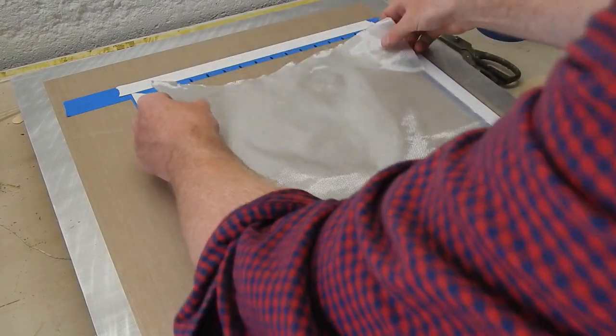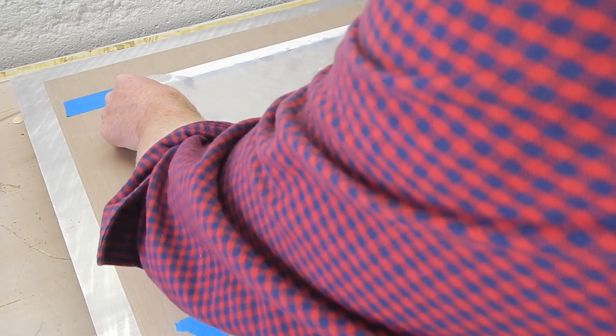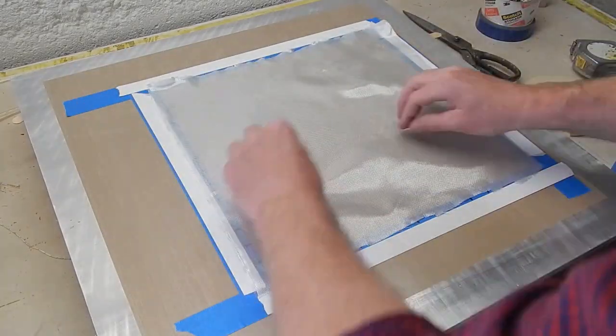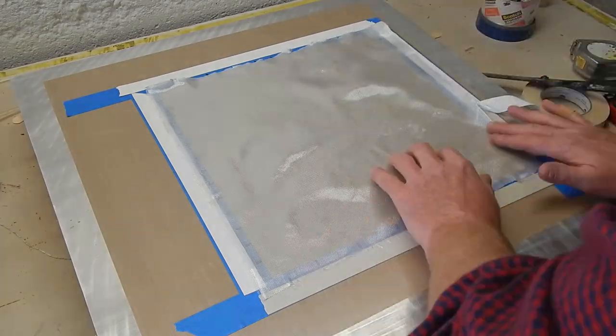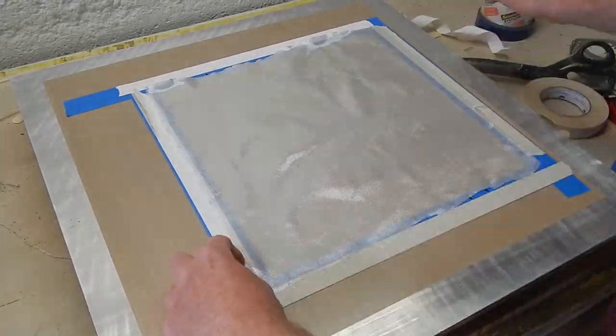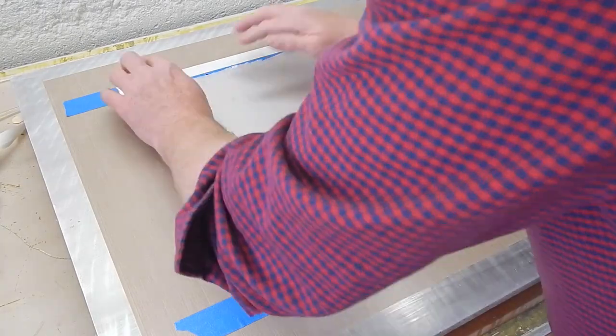So here's the glass. This is that 70 gram or two ounce e-glass woven. I'm putting it down as neatly as I can, trying to get the wrinkles out of it, and just tacking the edge to the double-sided tape.